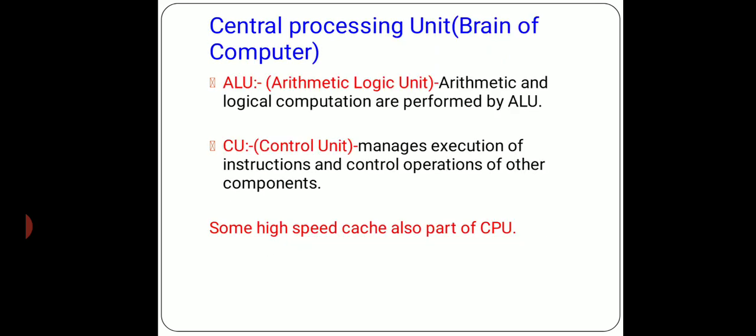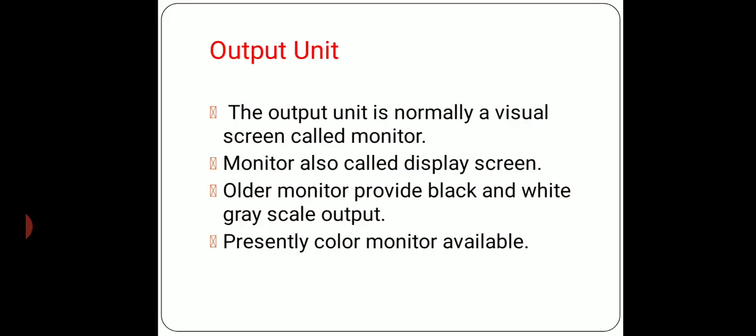Next is the central processing unit — CPU. ALU and CU are the two parts of CPU. First is ALU and second is CU. ALU is used to perform arithmetic and logical operations, and CU is used to perform tasks related to controlling. Output unit: the most well-known output device is the monitor.